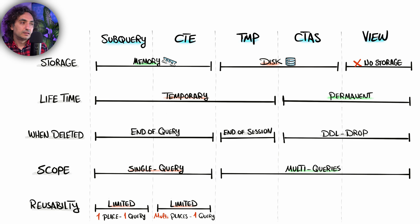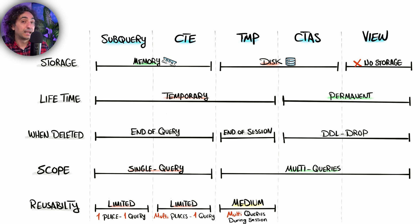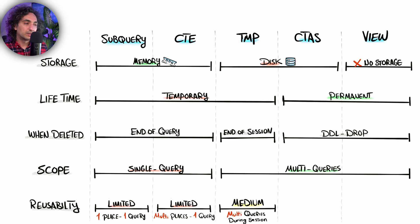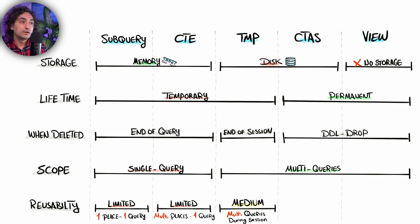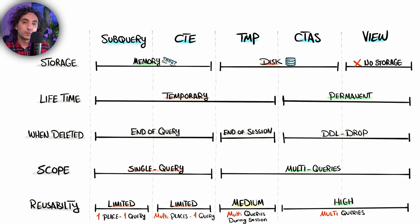Temporary tables have medium reusability — you can access the data from multiple queries, but only during the session. Once the session ends you cannot access it anymore and have to recreate it. CTAS and views offer the highest reusability: they are always there for multiple users from multiple queries, which can eliminate a lot of redundancies and means you only have to do the job once.